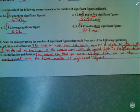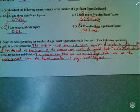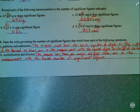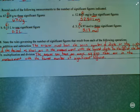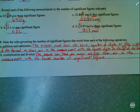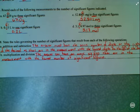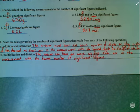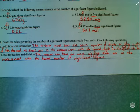The rule governing the number of significant figures for addition and subtraction is that the answer must have the same number of digits to the right of the decimal as there are in the measurement with the fewest digits to the right of the decimal. So you're simply counting the number of digits to the right of the decimal.